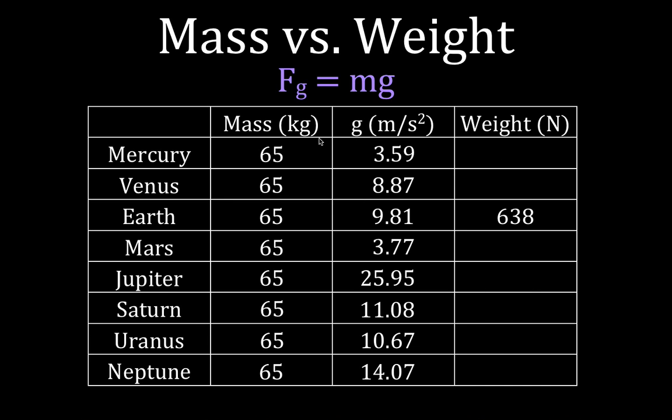Your mass is the same, but when we multiply to find the weight using m times g, Newton's second law, you get that on Mercury you would only weigh 233 newtons. On Venus, you weigh a little more, but it's still less than Earth. On Mars, it's less. On Jupiter, it's the most because Jupiter is a really massive planet. On Saturn, it's less. Saturn is actually a pretty gaseous planet. It's not that much mass. It's big, but it's mostly gas.